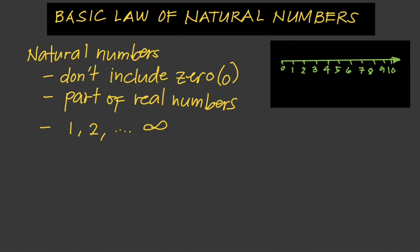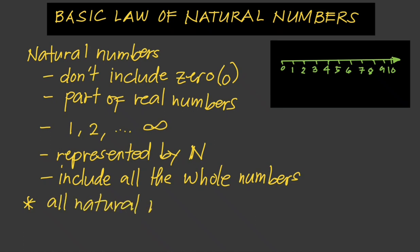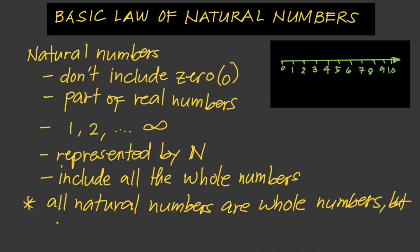We can represent natural numbers by N. And natural numbers include all the whole numbers excluding the number zero. In other words, all natural numbers are whole numbers, but all whole numbers are not natural numbers.